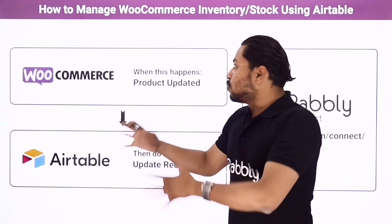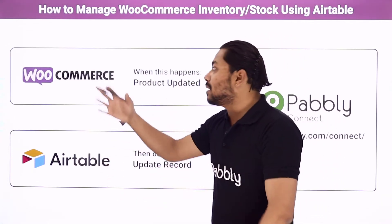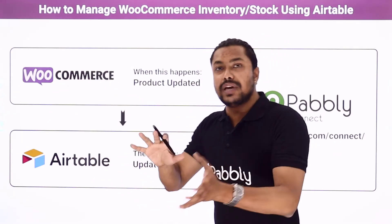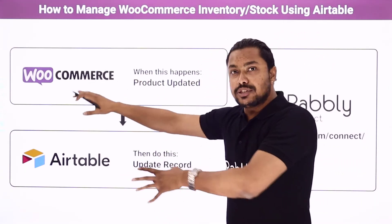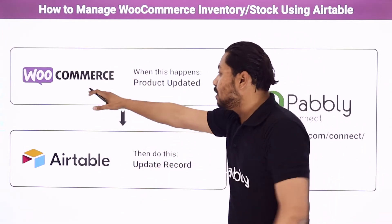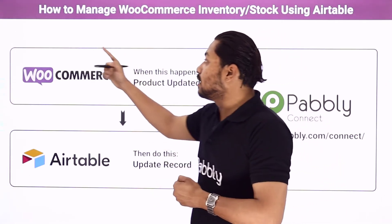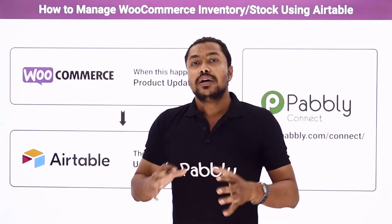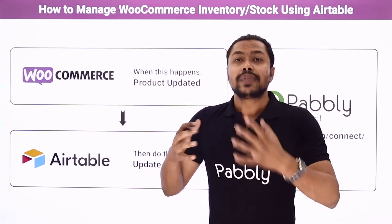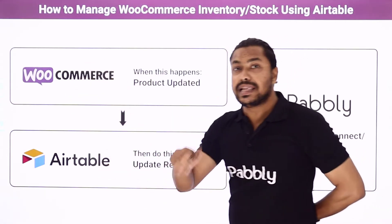Suppose a person is working in the inventory section for your product, another person is taking account of the products coming in, and there is another person who wants to know about the stock. We are updating stocks through WooCommerce. Whenever the stock quantity of a product is updated, it will automatically be sent to the Airtable database and updated accordingly. This automation is very useful for big companies using an e-commerce store, as they can easily arrange and rearrange their products according to stock quantity and update that on their website.